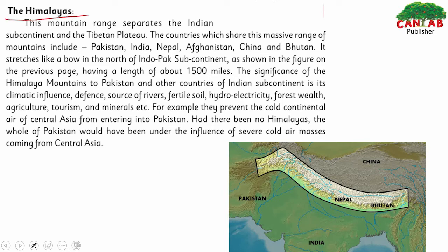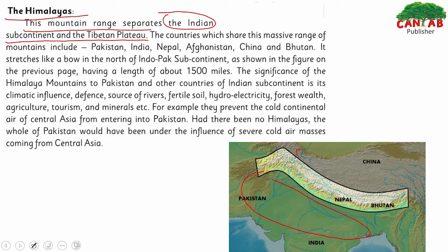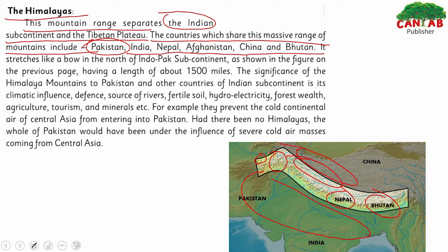The Himalayas are the mountain range that separates the Indian subcontinent and the Tibetan Plateau. This massive range includes Pakistan, India, Nepal, Afghanistan, China, and Bhutan. The Himalayas stretch like a bow in the north of the Indo-Pak subcontinent, with Pakistan on one side and India on the other.